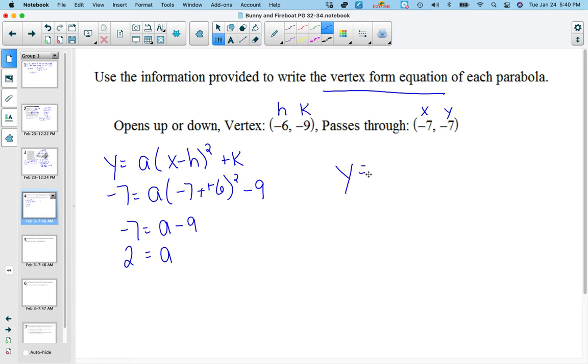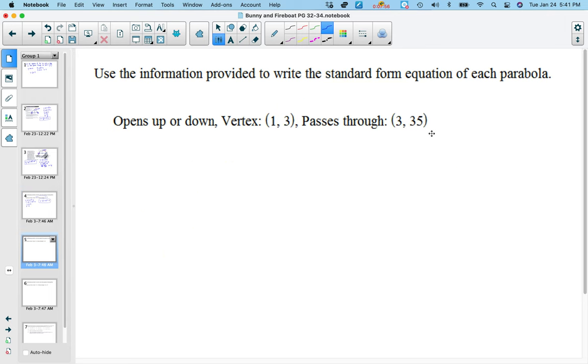So then my equation is y equals 2, x minus a negative 6 makes it plus 6, quantity squared, and then minus 9. So this would be my equation in vertex form.